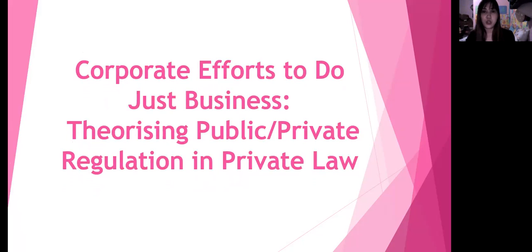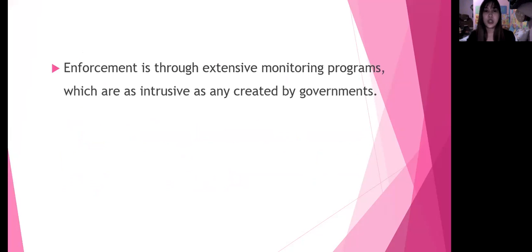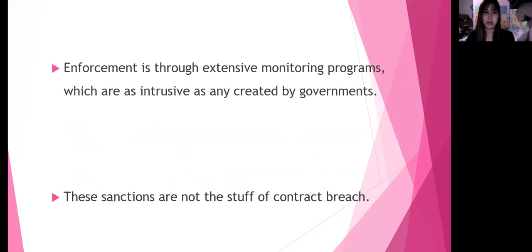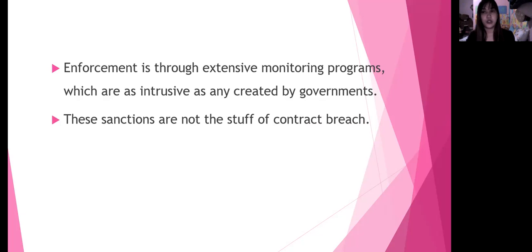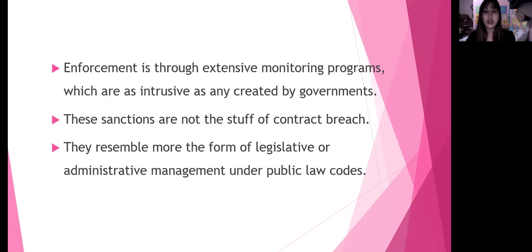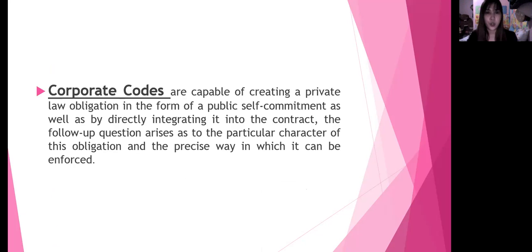Another topic is corporate efforts to do just business, theorizing public, private regulation, and private law. Enforcement is through extensive monitoring programs, which are as intrusive as any created by governments. These sanctions are not the stuff of contract breach — they resemble more the form of legislative or administrative management under public law codes. Corporate codes are capable of creating a private law obligation in the form of public self-commitment, as well as by directly integrating into the contract. The follow-up question arises as to the particular character of this obligation and the precise way in which it can be enforced.